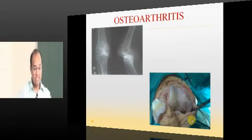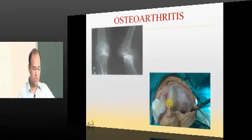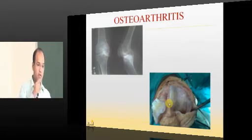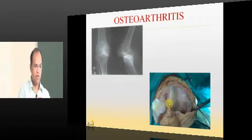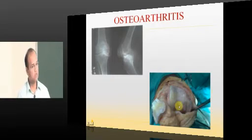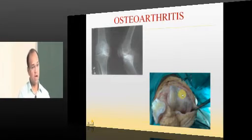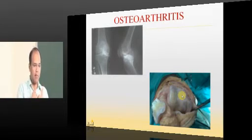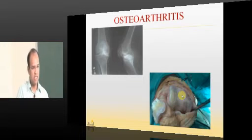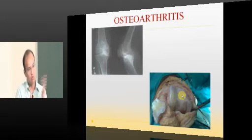But if this articular cartilage is going off for some reason — either because of degeneration or because of a pathology which is an inflammation or an infection — what happens? Once this soft, smooth, glistening, resilient structure has gone, the bony ends which are rough now come into play and rub against each other. And once they rub against each other, they cause a lot of pain, and the joint cannot be moved as smoothly as it was moving in the past.